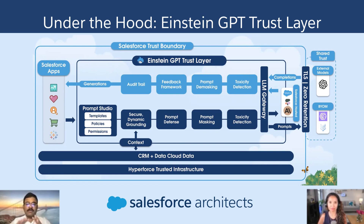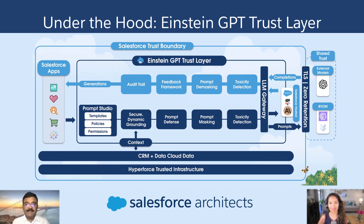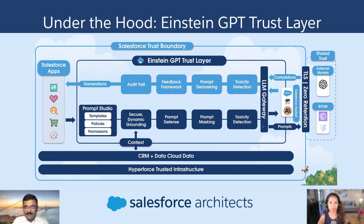What that means is we don't want to lock down our customers with only Salesforce-provided LLMs. Generative AI is one of the fastest, rapidly growing technologies in the industry, and we wanted to provide flexibility for our customers to use best-in-breed LLM models that fit their Einstein GPT use cases. With OpenAI, which is one of the leaders in LLM providers we have partnered with, and Cohere and Anthropic, which have their own strengths, the LLM gateway layer does the magic and provides the flexibility for our customers.